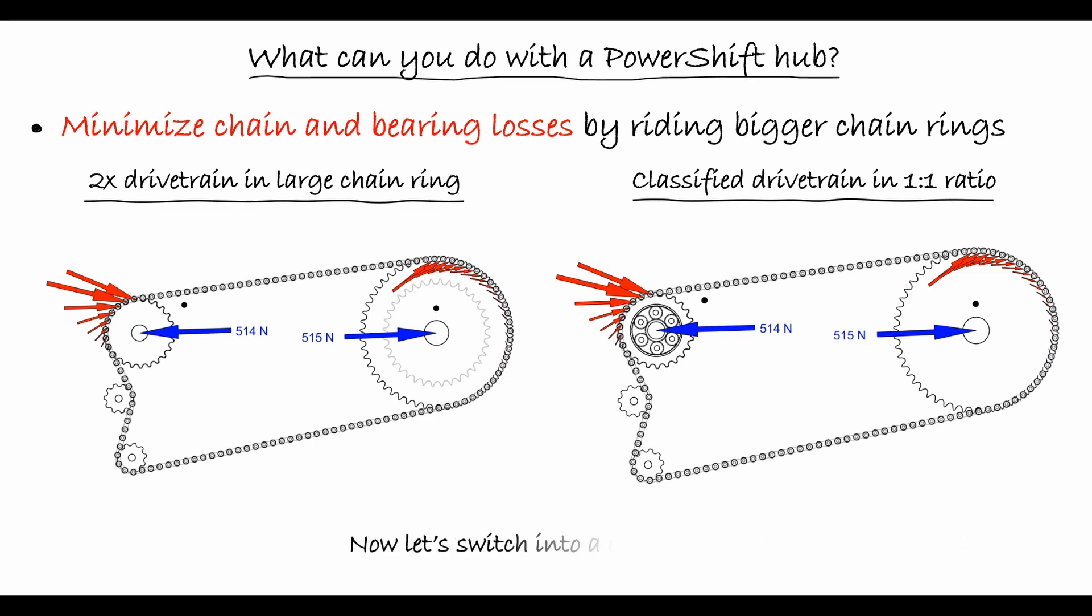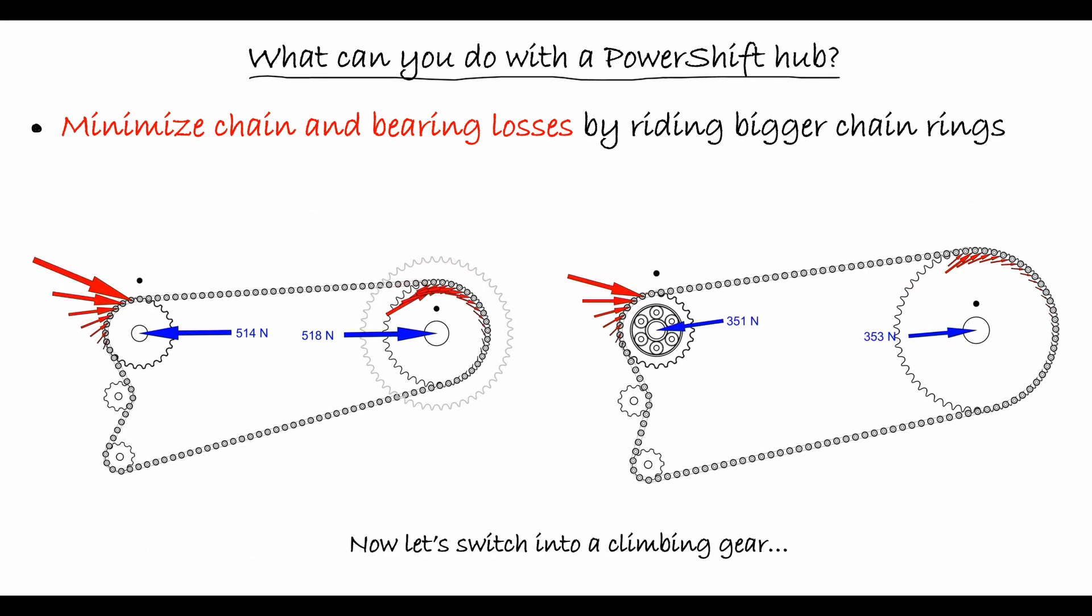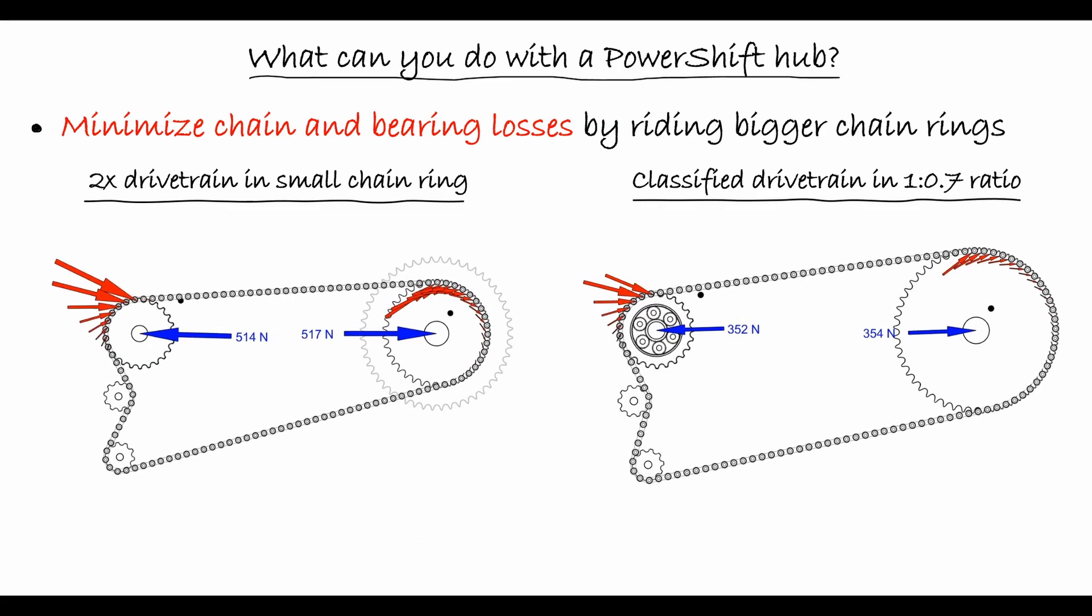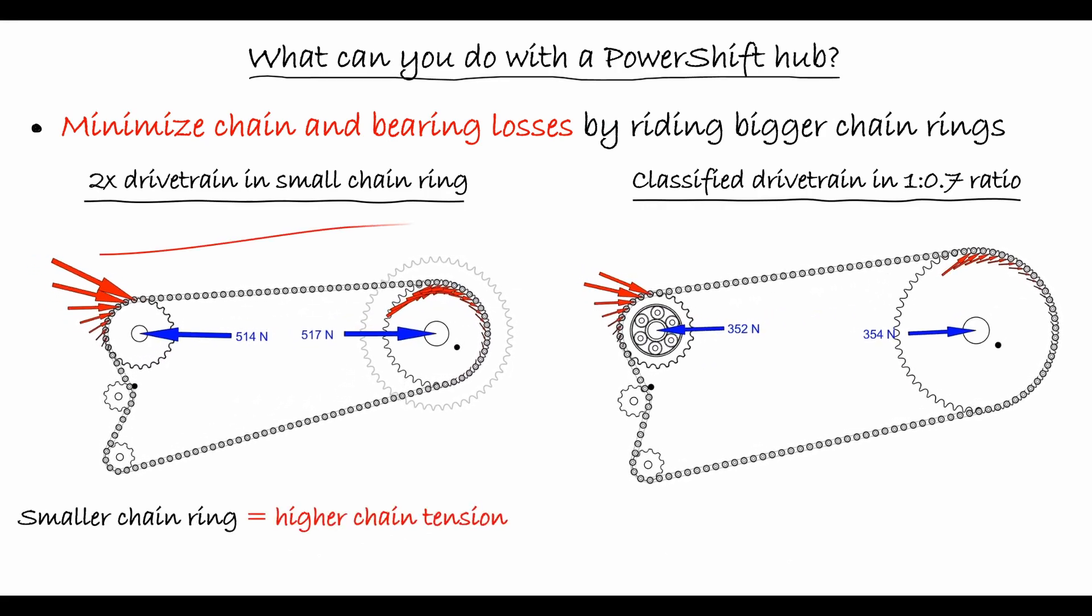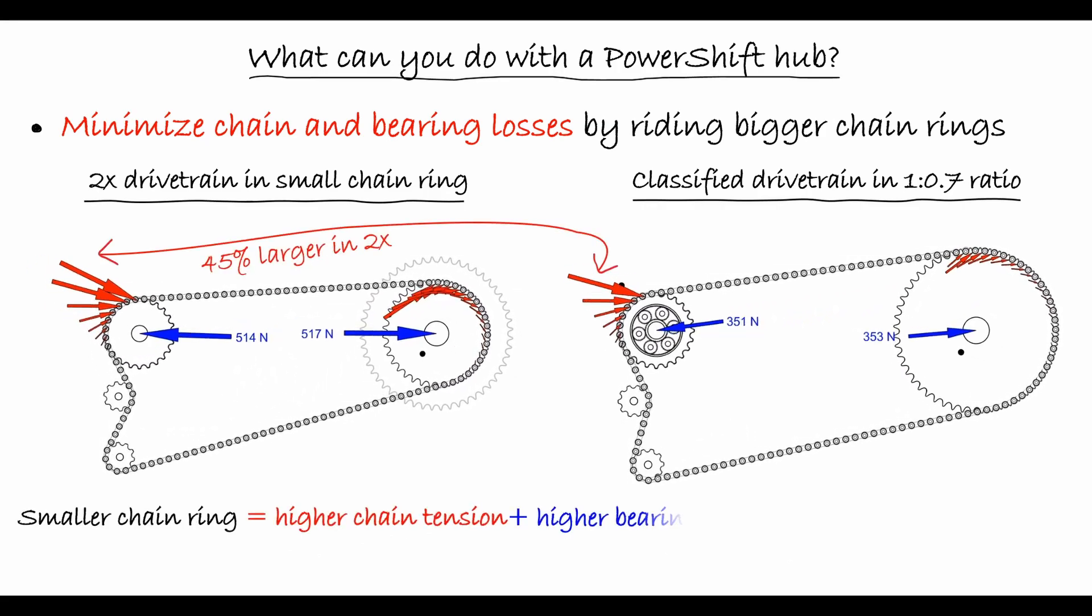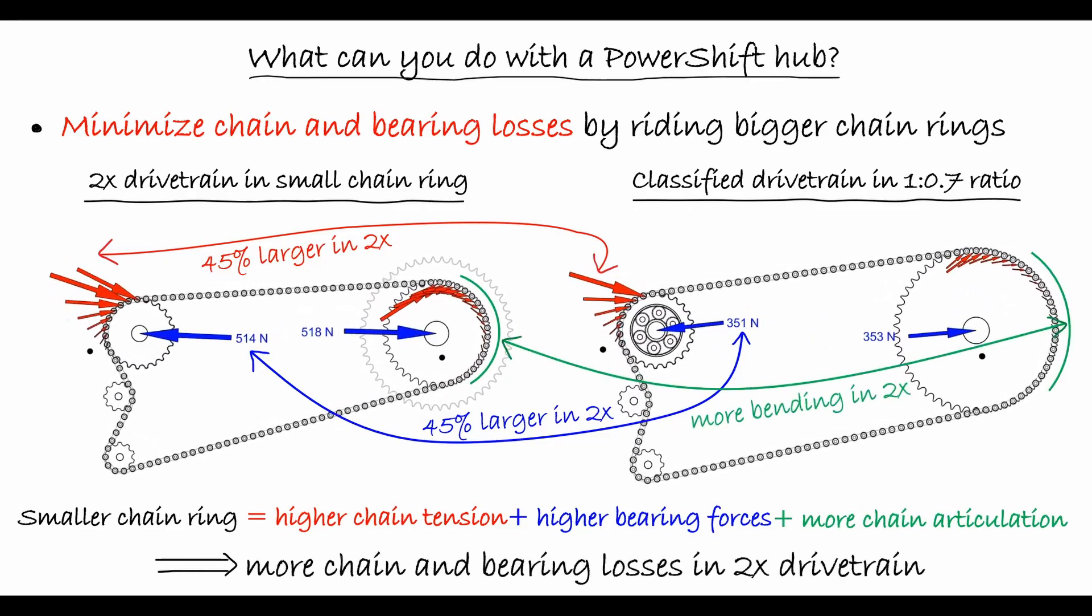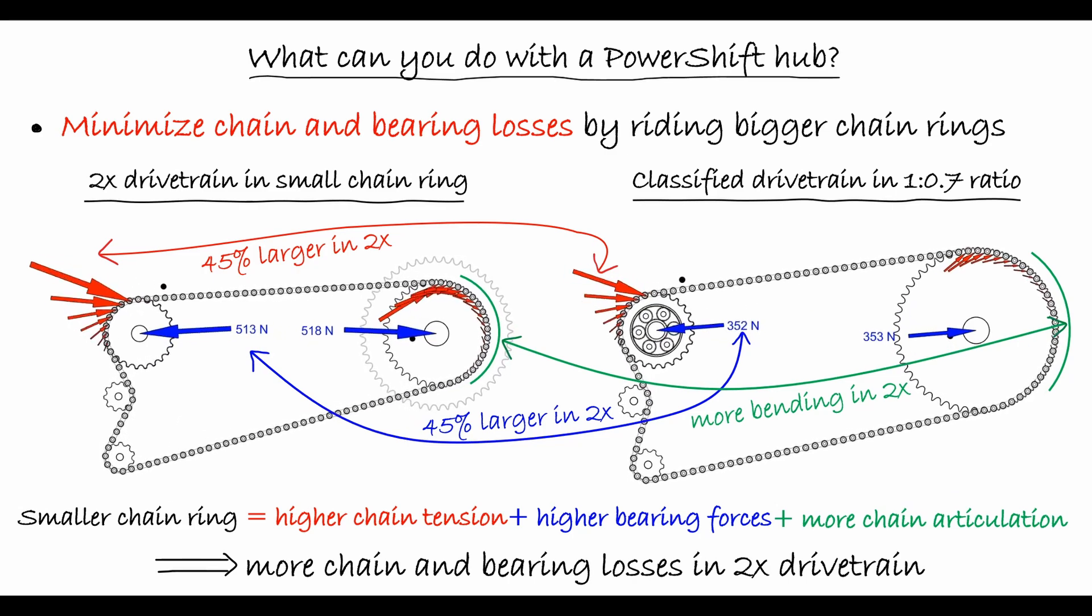Let's now switch into a climbing gear, meaning we shift into the smaller chainring in the 2x system, and we shift the PowerShift hub into its 0.7 ratio. Both drivetrains operate at the same ratios, hence the cyclist cadence and wheel speed are the same in both scenarios. However, in the 2x system, because of the smaller chainring, the chain tension, bearing forces, and chain articulation are about 45% larger than in the PowerShift system, leading to considerably larger chain and bearing losses.